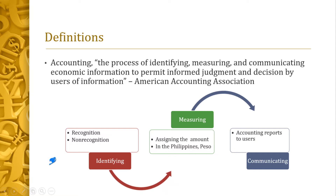For measuring — Step Two — it is the assigning of an amount after recognition, affecting the accounts of the business transaction. For communicating — Step Three — it is the delivering of accounting reports and financial statements to users. Examples of users are the owner and the creditors.